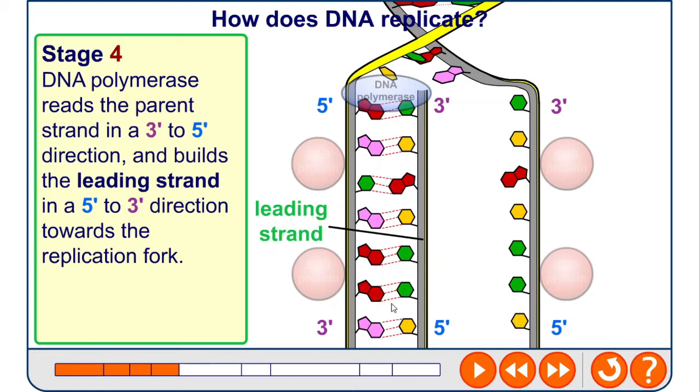All the bases are complementary following the base pairing rules, so you end up with another molecule of DNA starting to be formed that is exactly the same as the parent strand, with one strand from the parent and one new strand.